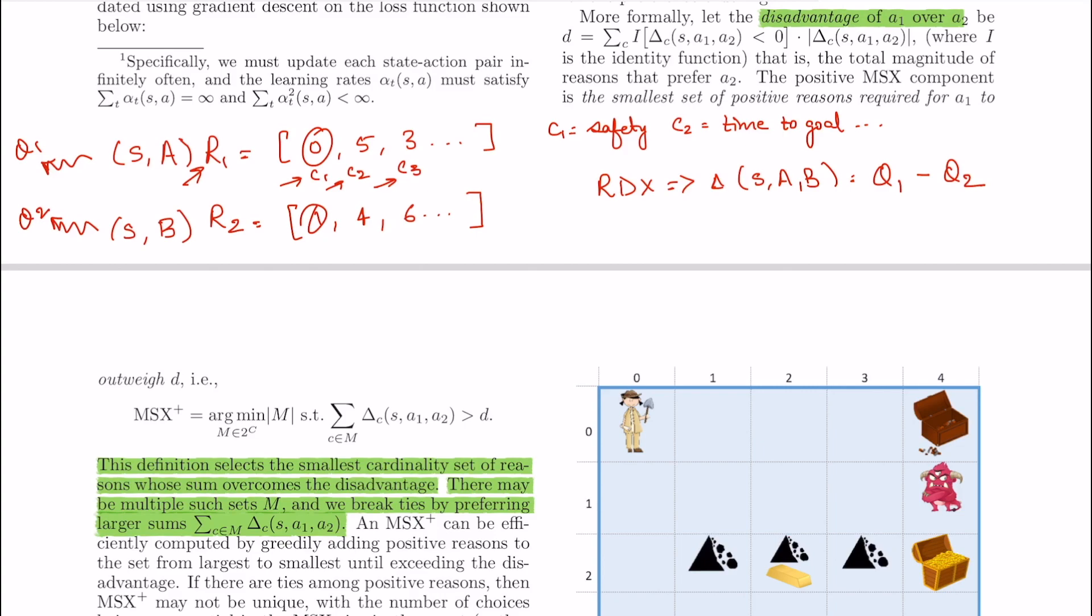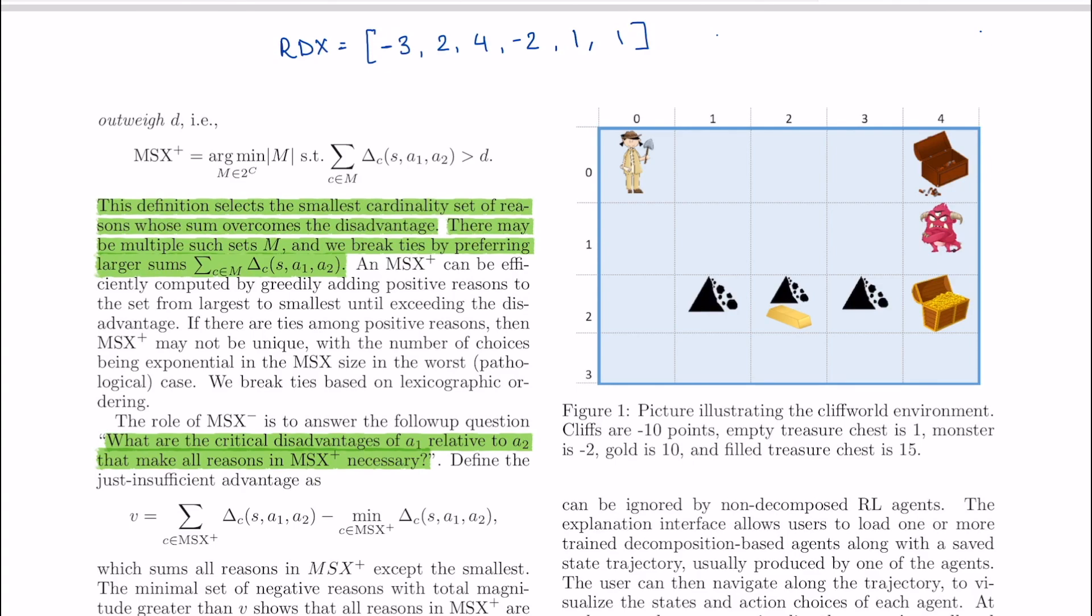Well as you can figure out this RDX would in fact be a vector itself where each of the indices would be the types. Now this could have been the final explanation but the problem is the size of such a vector depends upon the number of reward components and that can exceed what users can comprehend. Hence the authors provide a way to possibly reduce the size of such a set. This is where minimal sufficient explanation or MSX comes in.